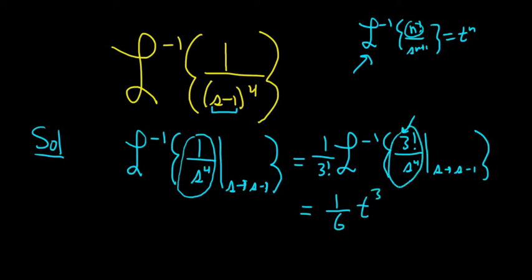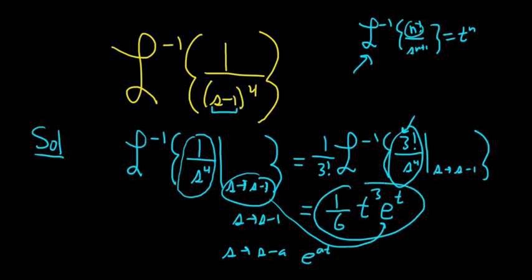And then what about that shift we performed? Well, we shifted s to s minus 1. That's going to give us an e to the t. It's really 1t. So if you shift s to s minus a, it produces an e to the at at the end. So this shift gave us this e here. And that's the final answer.